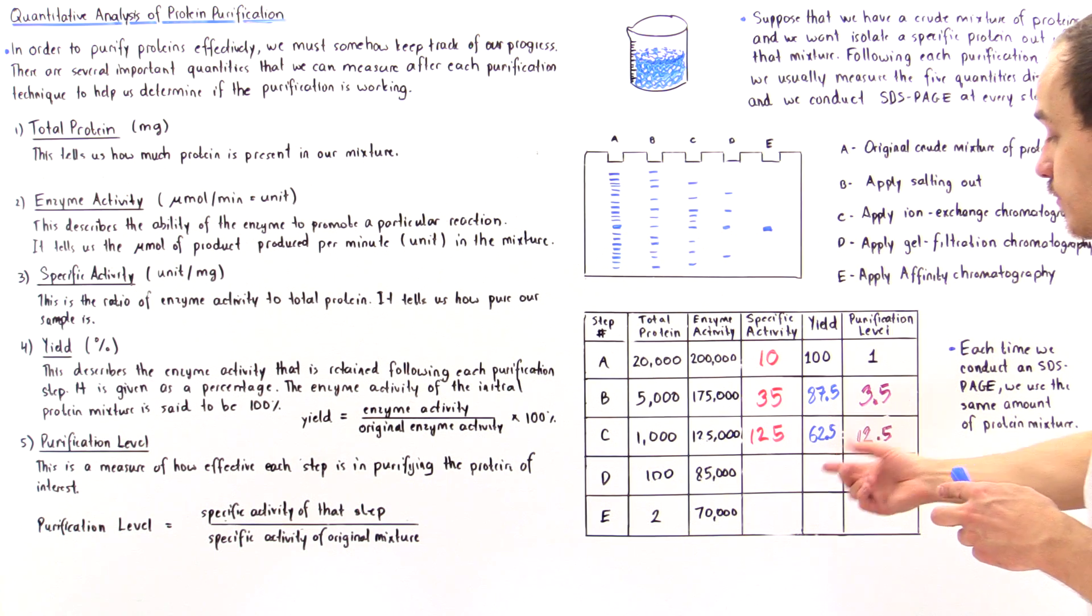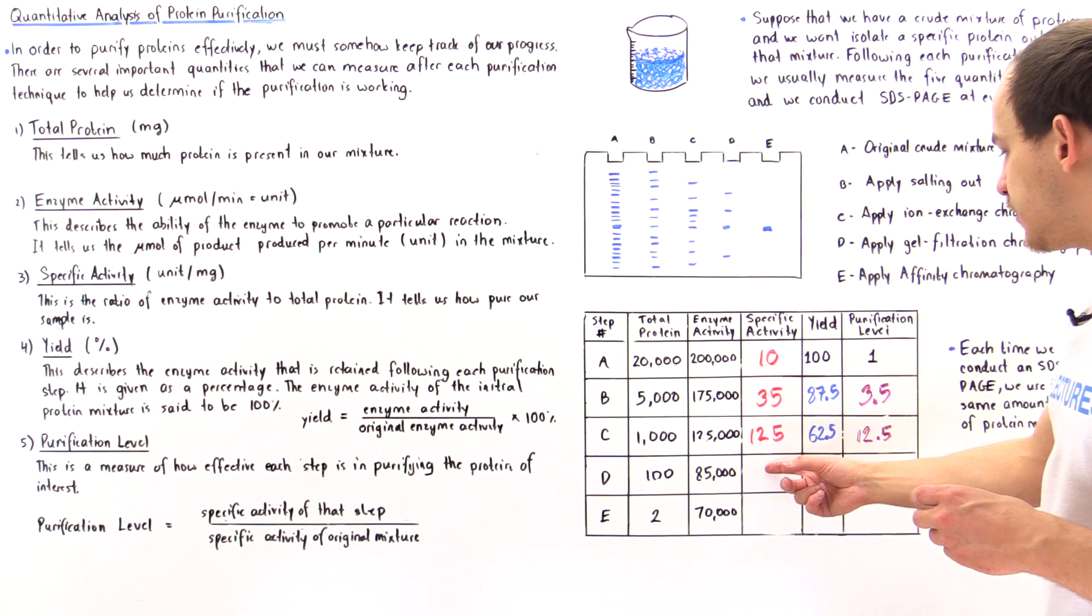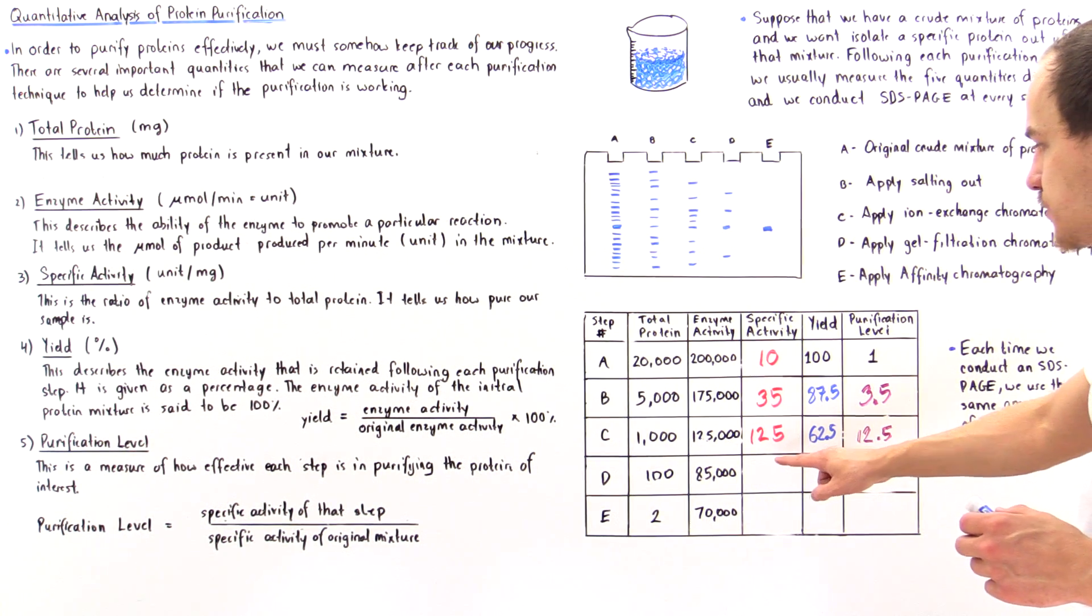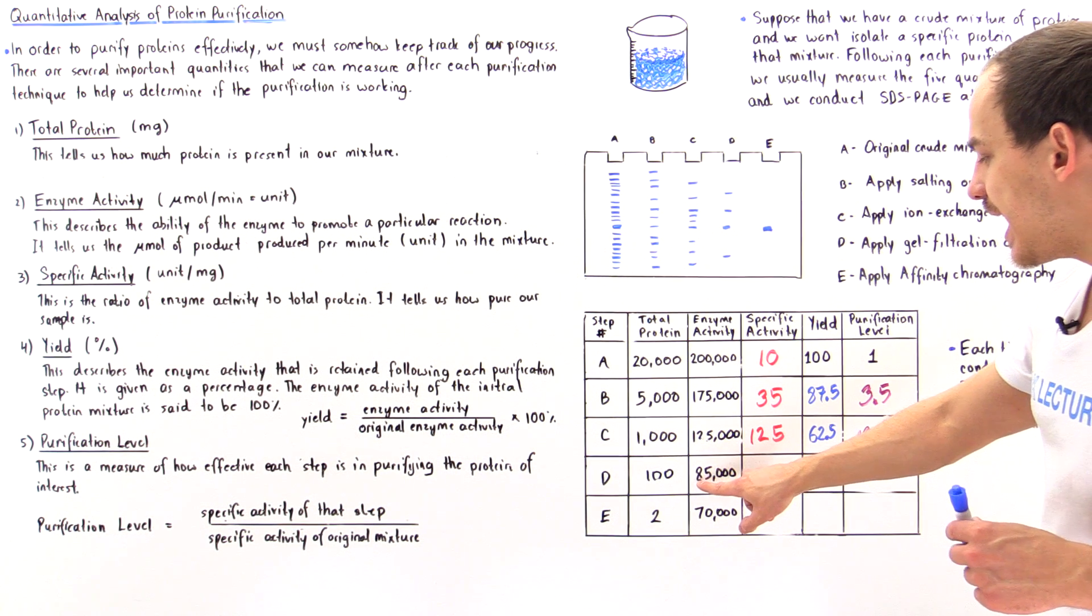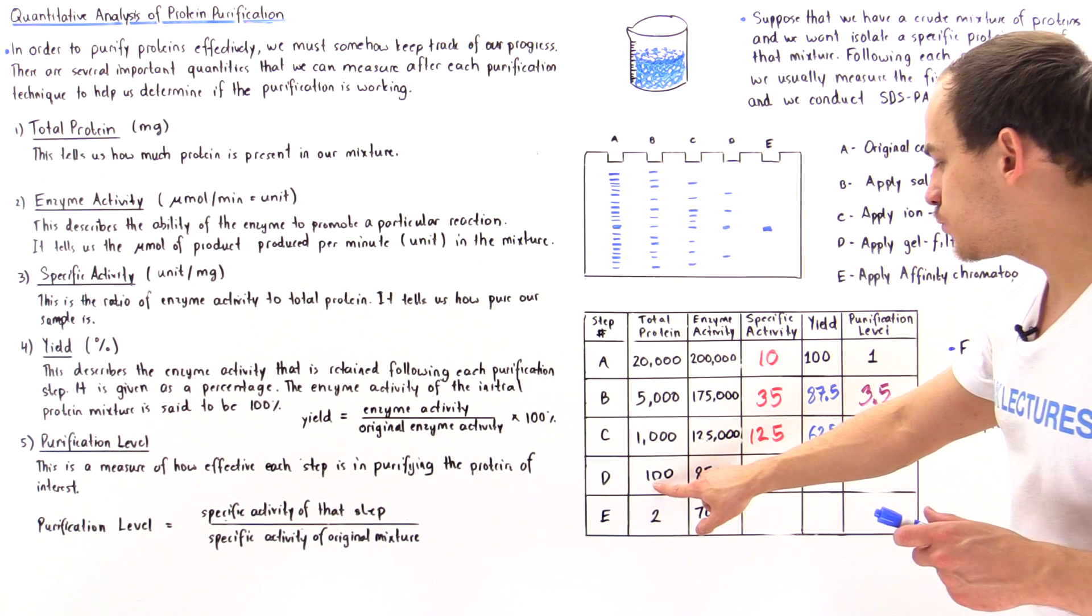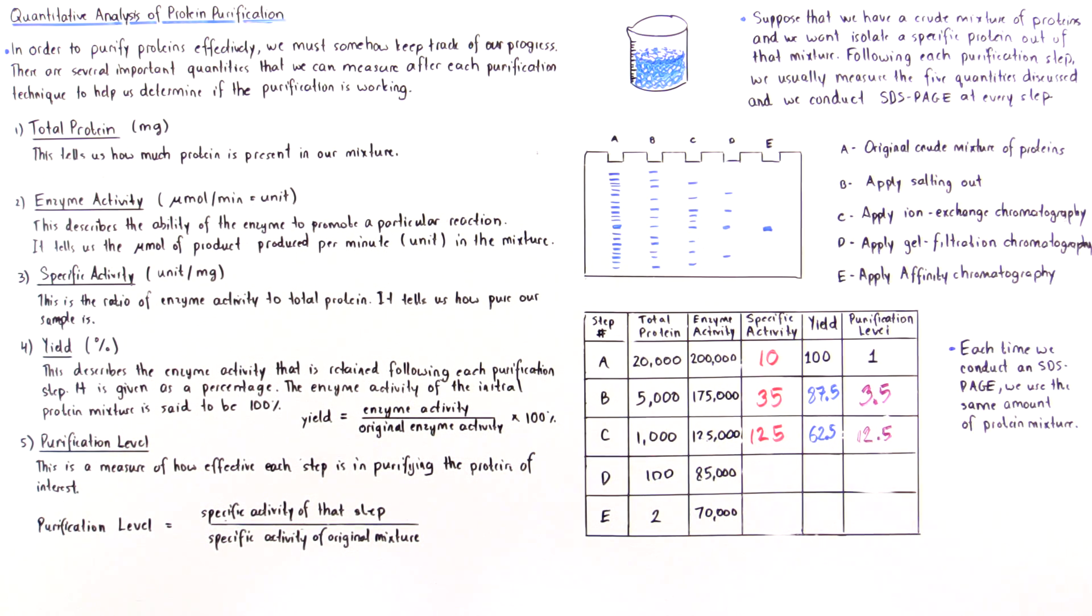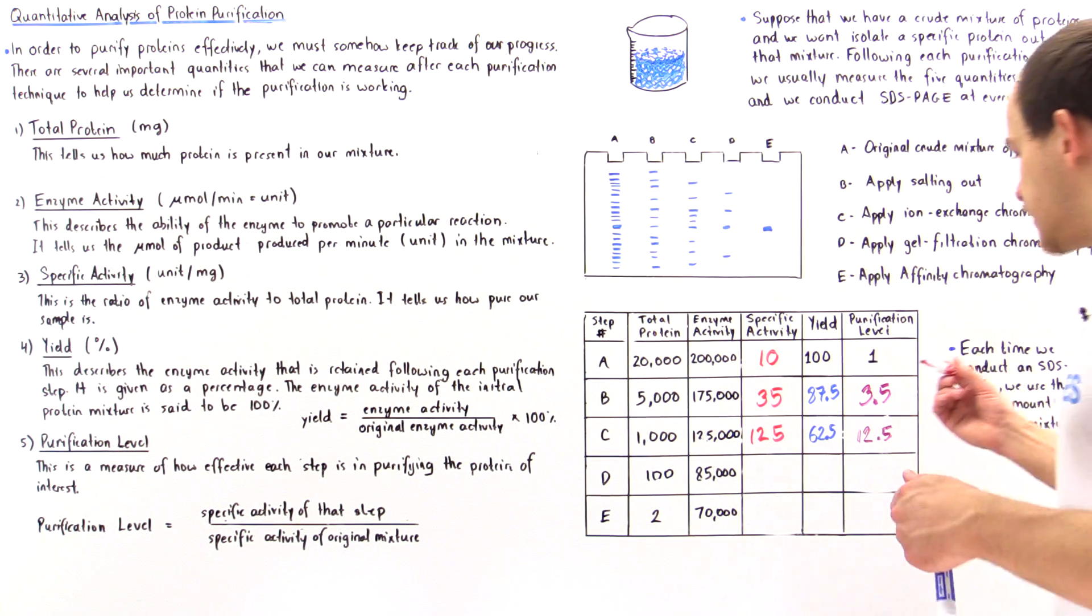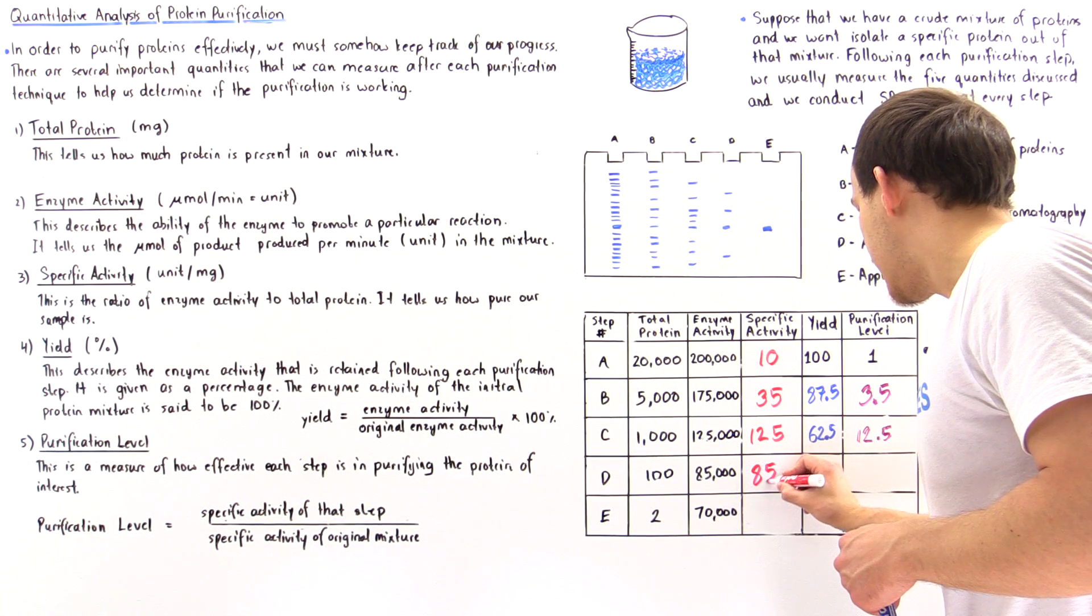That is shown by the decrease in band distribution number. Let's calculate this box. The specific activity is 85,000 divided by 100. The two zeros cancel out, giving us 850 divided by 1, which equals 850.